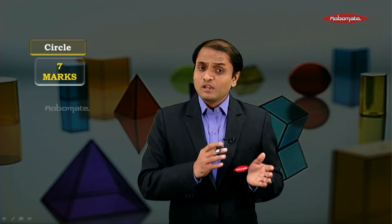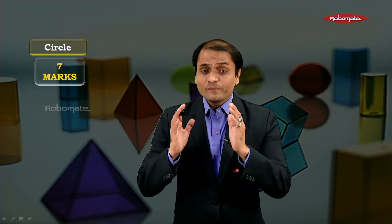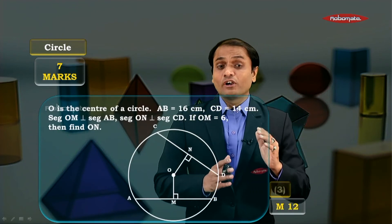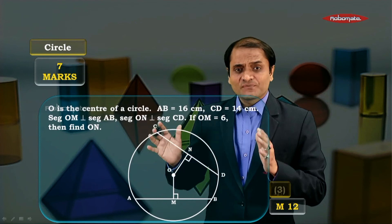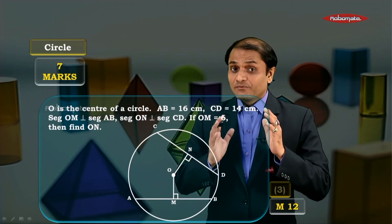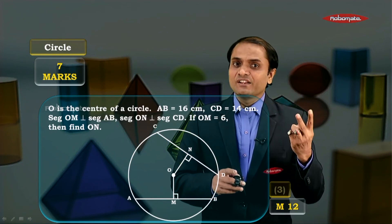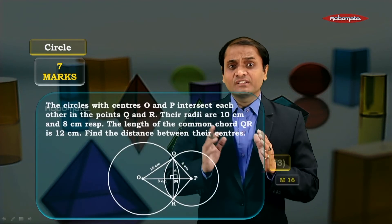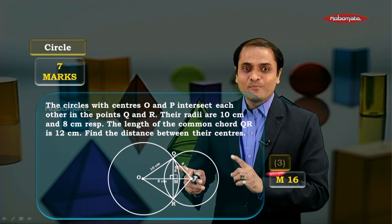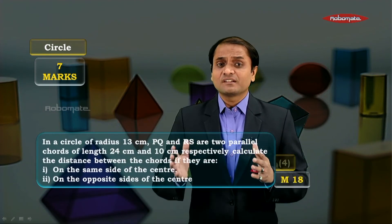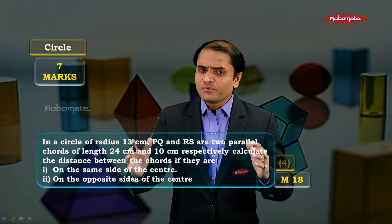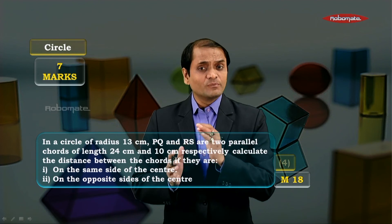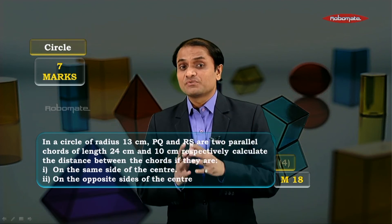Moving on to circle — you can expect two questions: one for three marks and another for four marks. The chapter can be divided into three sections. The first section is based on the property that the perpendicular from the center to the chord bisects the chord. From this section, you could get one question for three marks. Normally they give questions where two chords are involved, requiring you to apply the property twice — module number 12. There is also a question with only one chord but two circles — module number 16. Very importantly, there will be a question on parallel chords using this perpendicular bisector property — module number 18, four marks.